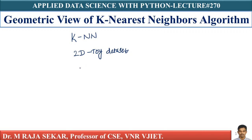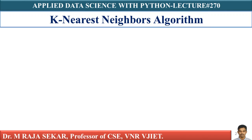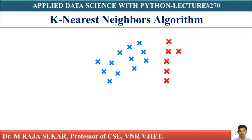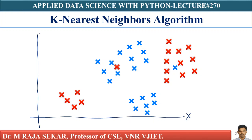Let's understand how it works. Let's take a case of binary classification. We already discussed what is binary classification in a previous lecture. Imagine I have two types of points — one is blue crosses and another one is red crosses. Blue crosses represent the positive class, whereas red crosses represent the negative class. It is a two-dimensional space — this one is the x-axis and this one is the y-axis, so it is 2D.